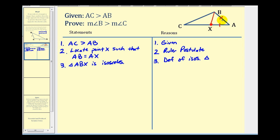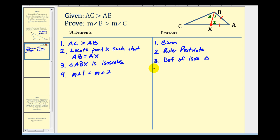The reason for this is just the definition of an isosceles triangle. Remember, if we have an isosceles triangle, the base angles are congruent and therefore equal in measure. So to keep track of all of these angles, let's go ahead and number them. Let's call this angle one, we'll call this angle two, and we'll call this angle three. Because triangle ABX is isosceles, we know the measure of angle one is equal to the measure of angle two. This is by the base angles theorem.